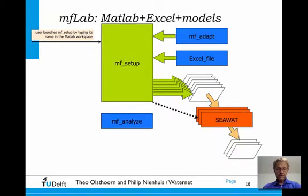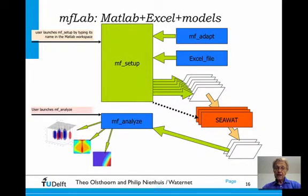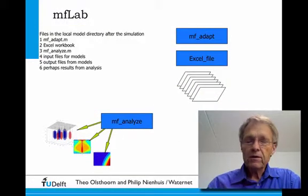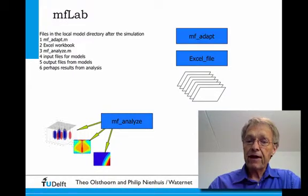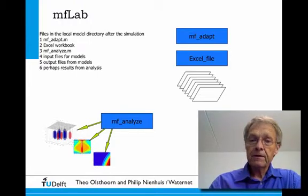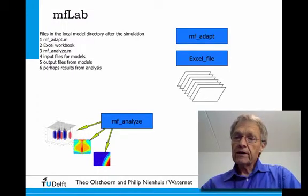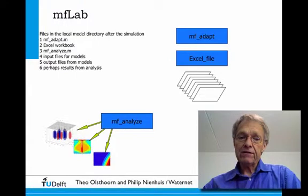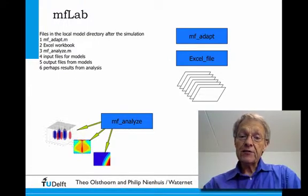Once the user has verified that normal termination has occurred, they invoke MF-analyze, which reads the output files, interprets them, and produces visualizations. Once finished, the directory contains numerous files — the inputs and outputs of the groundwater models — but these can be discarded. You only need the three files — MF-adapt, the Excel file, and MF-analyze — to regenerate exactly the same model at any point in the future.